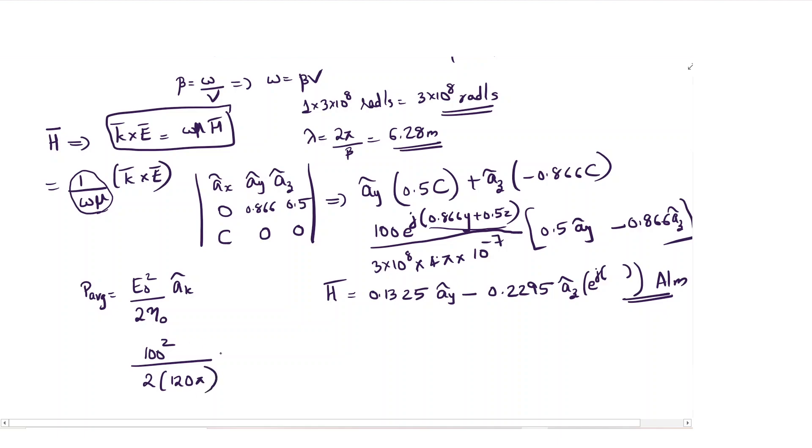Into 0.866 ay plus 0.5 az divided by square root of 0.866 square plus 0.5 square that is 1. Unit vector, vector divided by magnitude is 1 itself.